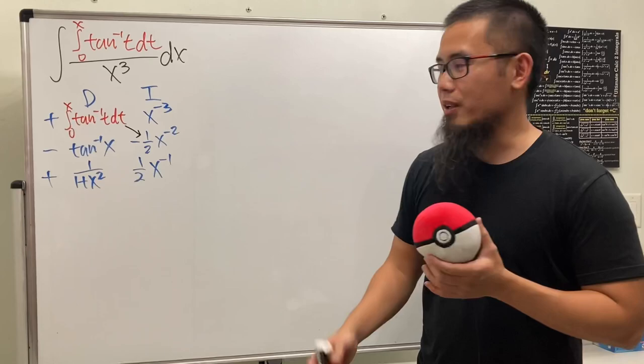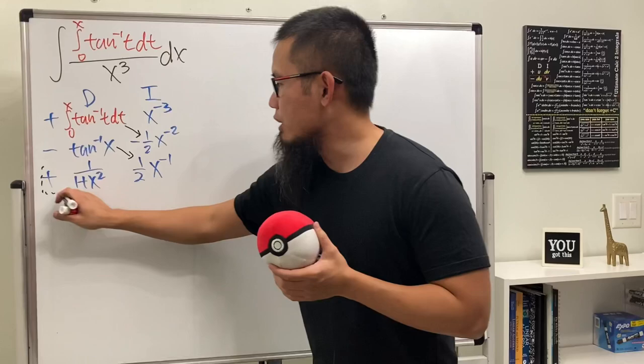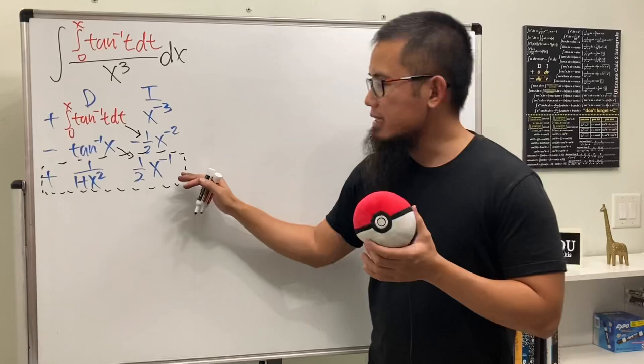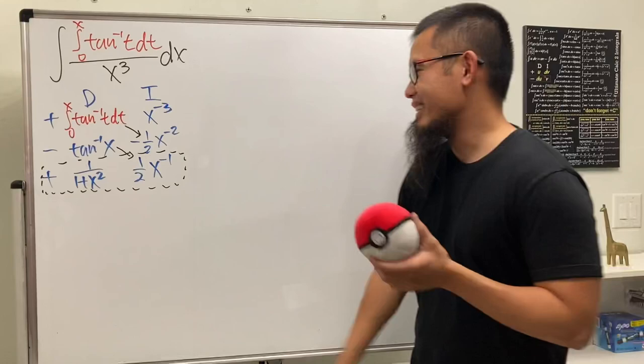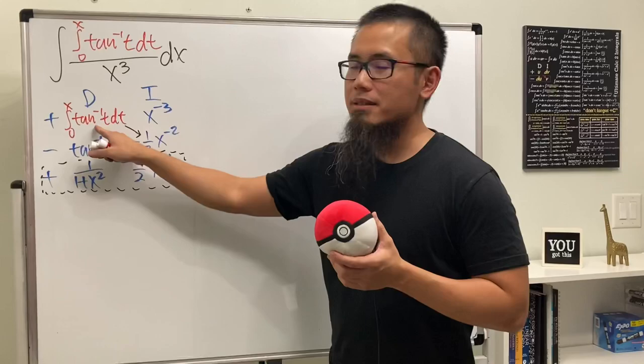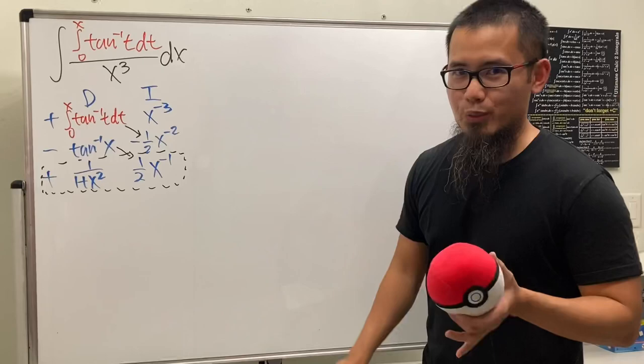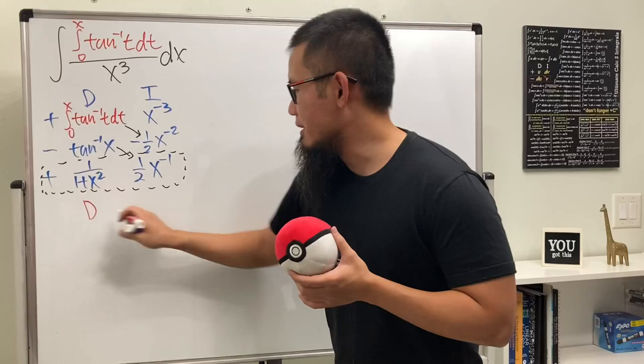So that's the DI table. This term times that term gives us the first part of the answer, this times that gives the second part, and lastly we multiply the two entries in the final row and put that in a sub-integral. The reason I stop here is that this times that can actually be integrated. So if you want to stop at this row, you would set up another integration by parts — but before we write down the first part, keep in mind we still have an integral to figure out.